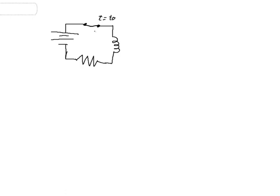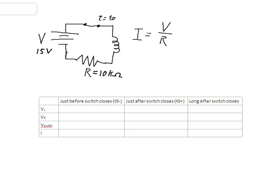Immediately before the switch is closed, there was no current. Immediately after the switch is closed, there's no current. But after a period of time, the current will ramp up, and after a long period of time, the current that's flowing will be about equal to V over R. Once we've got the magnetic field fully built around this inductor, the inductor is going to act like a short circuit. So all we'll have in the circuit then will be a voltage source and a resistor. Now I've added a table with values for the resistor and for the voltage source — let's fill in this table for what happens immediately before the switch closes, immediately after the switch closes, and a long time after the switch is closed.